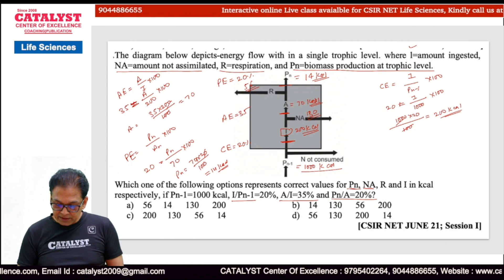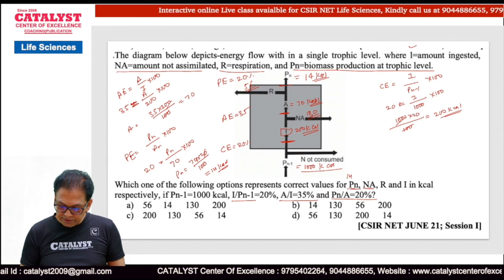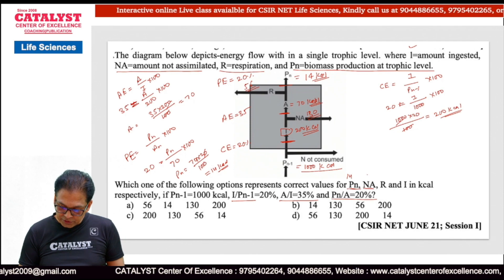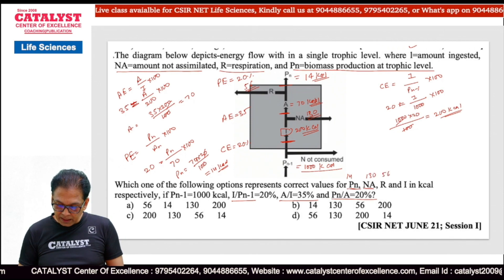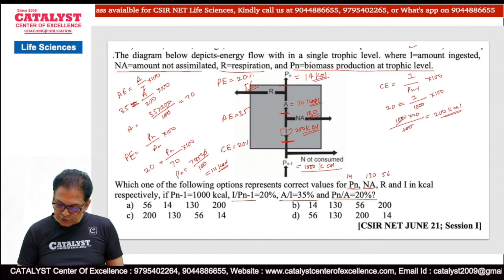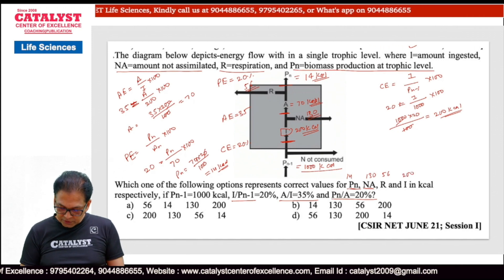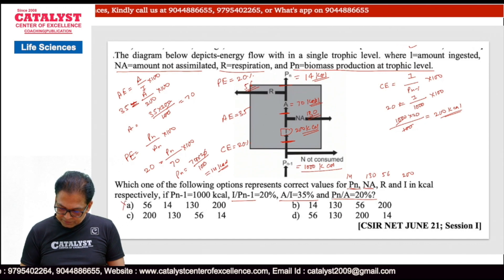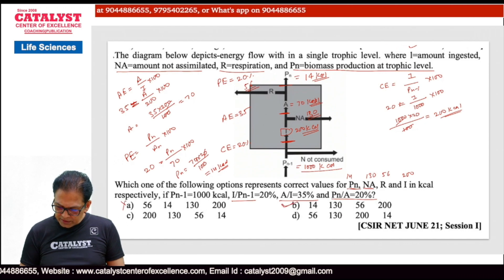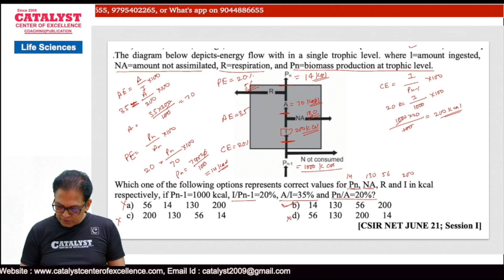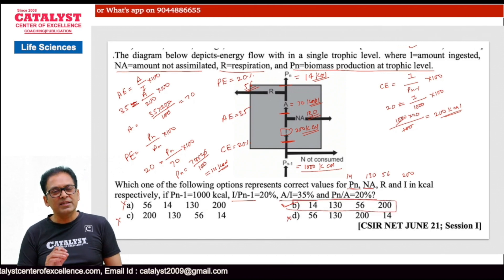Looking at the options: PN = 14, NA = 130, R = 56, and I = 200. So this is the correct option. It was such a simple question — I elaborated quite a bit, but otherwise solving this question wouldn't need more than one minute.